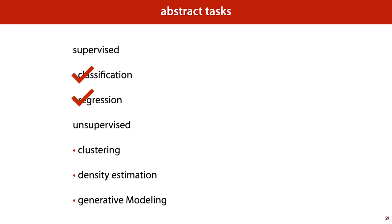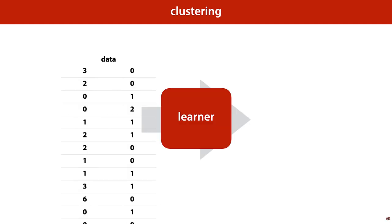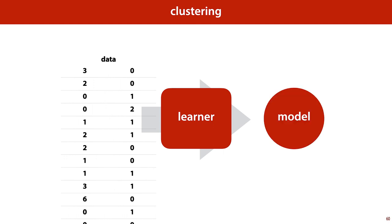Next up are the unsupervised tasks. In classification and regression, each instance comes with a label — an example of the sort of output we want our model to predict for each input. In unsupervised tasks, we only have the inputs, and the task is just to find any useful structure in the data. A simple example is clustering, where we ask the learner to split the instances into a number of clusters. The number of clusters is usually given beforehand by the user. We feed the data to a learner, which produces a model, and the model produces a cluster ID for a new unseen instance. This looks a lot like classification, but note that there are no example classes provided by the data — the learner has to find structure to divide up the data.